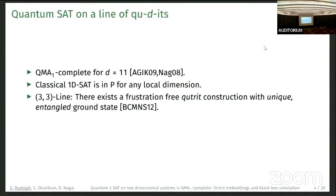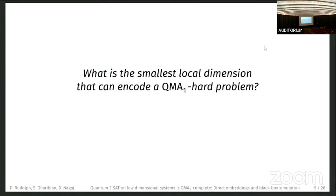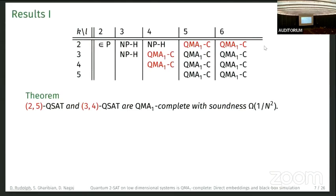On a three-by-three line, there exists at least a frustration-free qutrit construction with a unique entangled ground state. In this paper we mainly investigate the question: what is the smallest local dimension that can encode QMA1-hard problems? Let me go over our results. We have a table of different kl-QSAT results; the ones in red are what we proved. The main new results are two-by-five QSAT and three-by-four QSAT — larger dimensions follow for free.